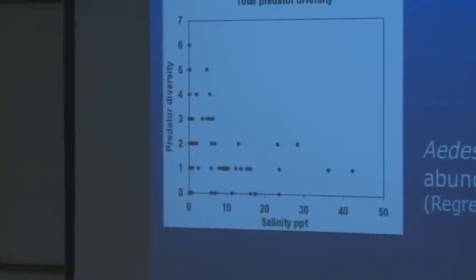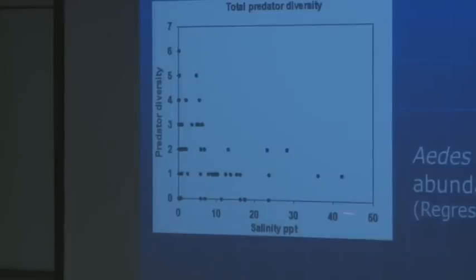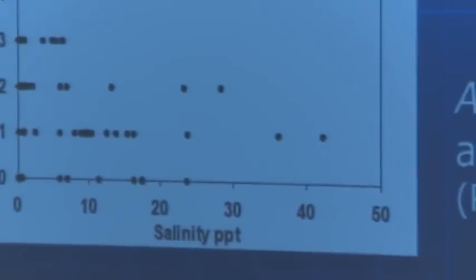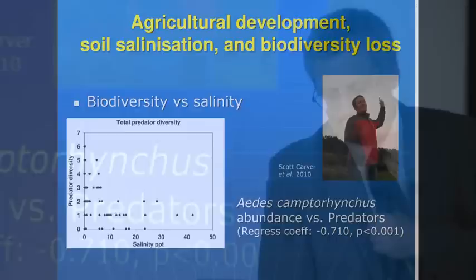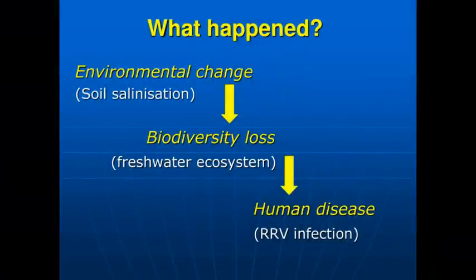Here is what he found: the vertical axis shows number of predators, the horizontal axis shows the salinity of the puddle, and each point is a puddle. You can clearly see that the saltier it gets, the fewer predators are present. This confirms the relationship between biodiversity loss and the ability of the vector mosquito to become dominant. The environmental change is soil salinization; the biodiversity loss is predators and competitors; you've disrupted the freshwater ecosystem and the result is epidemics of human disease.